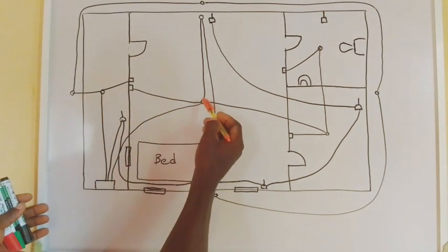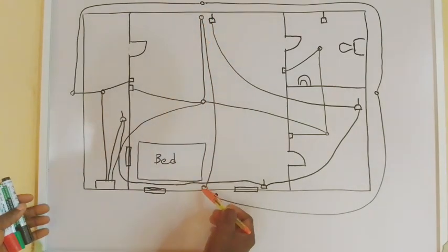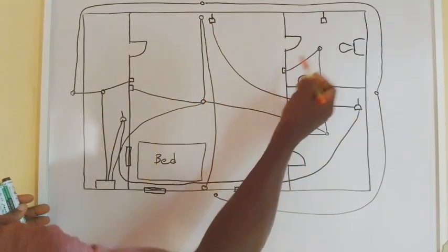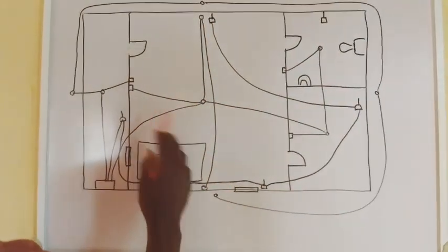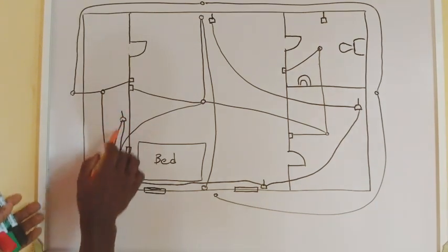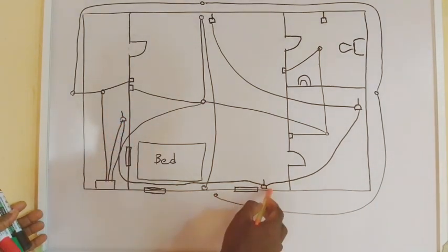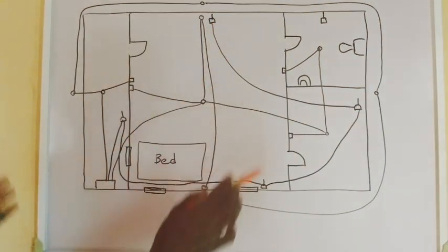In this particular one, we have one, two, three, four. Four is okay for this circuit. Then in our socket outlet, we have one socket, two, three and four. They are okay.